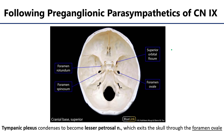That lesser petrosal nerve then goes through the roof — the tegmentum — of the middle ear, and it ends up in the cranial cavity sandwiched between dural layers. Those fibers travel along a groove for the lesser petrosal out to the foramen ovale, which we can see right there. Recall the largest structure that goes through the foramen ovale is V3, the mandibular division of the trigeminal nerve. But in addition to that, we also have the lesser petrosal heading through there.